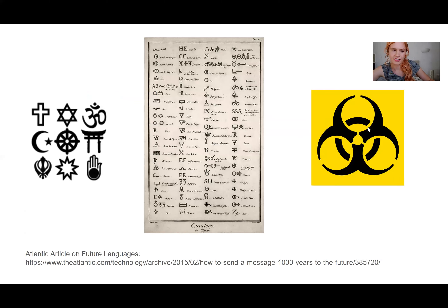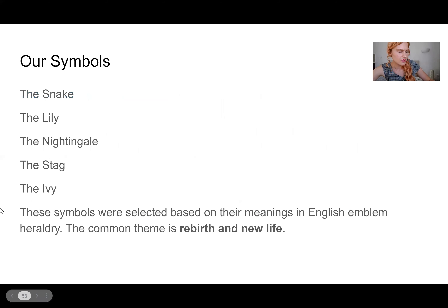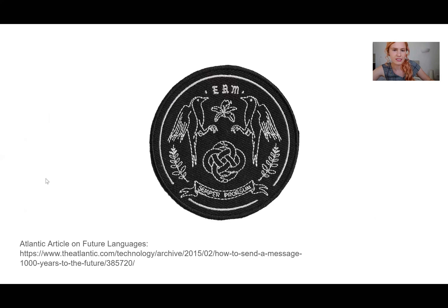We know that certain symbols mean things universally — like the radiation symbol or the Christian cross — without relying fully on language. So we use traditional English heraldry symbols to design a crest that represents our brand. Learning from history is a huge part of our movement. We chose to focus on rebirth and renewal, and we wanted our symbols to reflect that. Here is an example of our crest, and we'll go into the different meanings of each object.